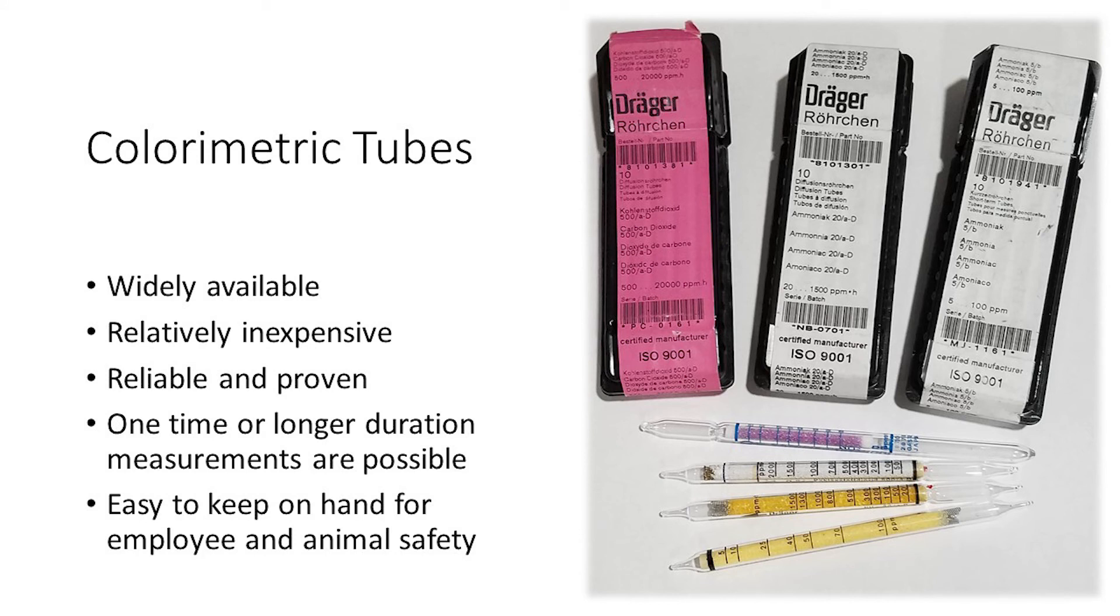Colorimetric tubes are widely available, have a relatively low cost, and offer a reliable and proven method for roughly measuring ammonia gas concentrations in animal environments. They can be used to take a quick snapshot of ammonia levels at various locations around the barn and should be kept on hand for farm worker and animal safety.